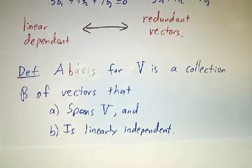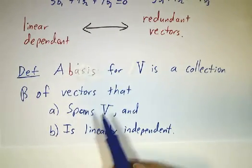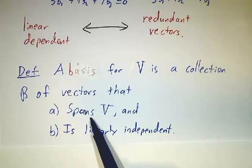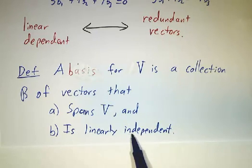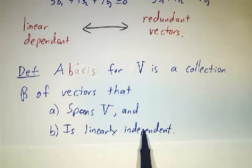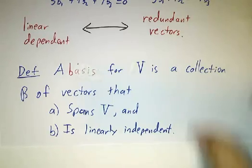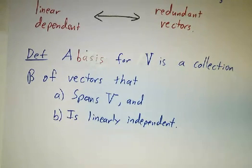Now, a basis for a vector space is a collection of vectors that spans—there are enough vectors to explore every nook and cranny of V—and is linearly independent. That is, there are no extra vectors. That's the definition of a basis and we'll explore how that works in the next video.